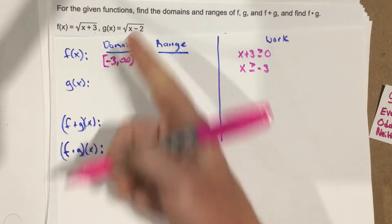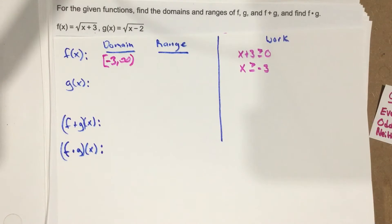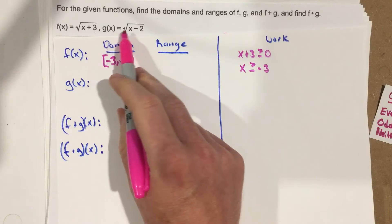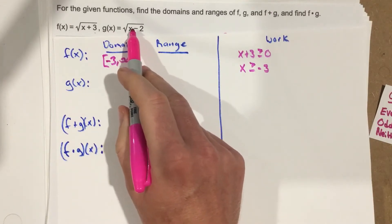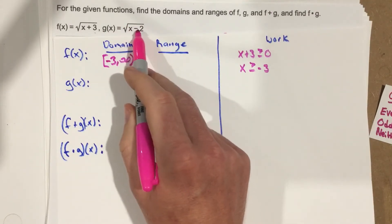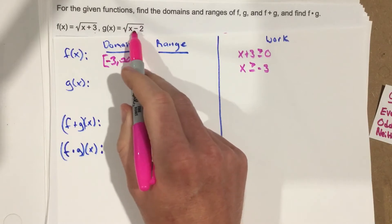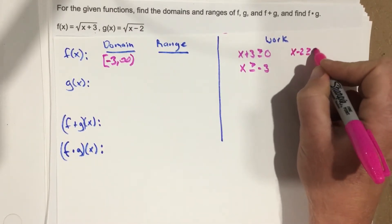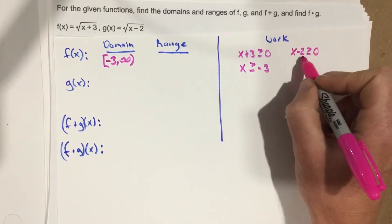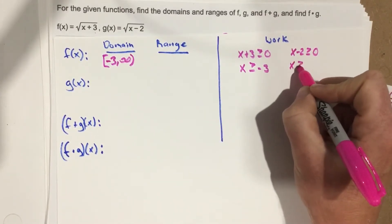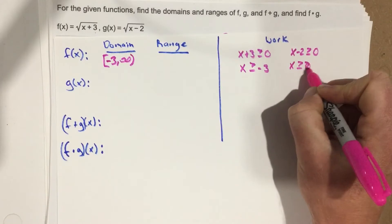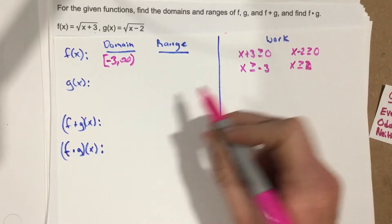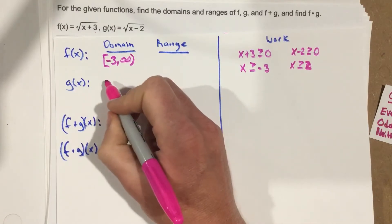I do the same process for the domain of g of x. When I have the radical of x minus 2, I take the inside: x minus 2 has to be greater than or equal to 0. Adding 2 over, I get x greater than or equal to 2. So 2 to infinity works for the domain of g of x.